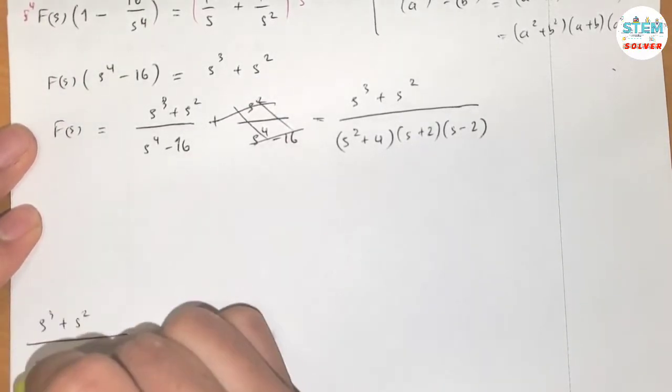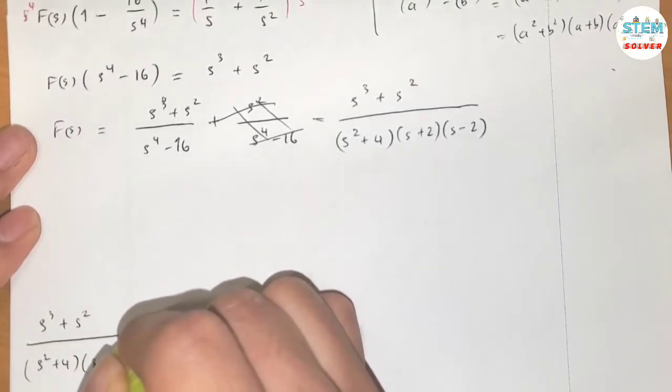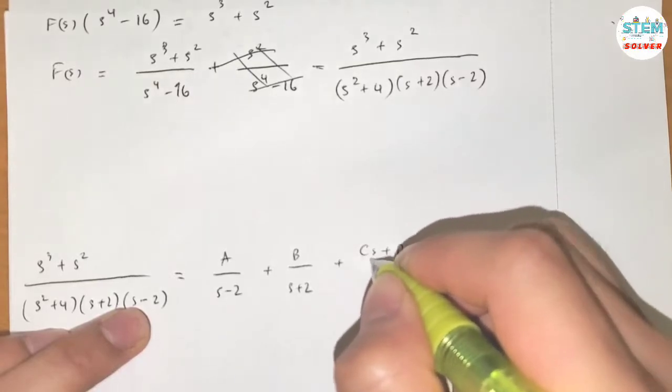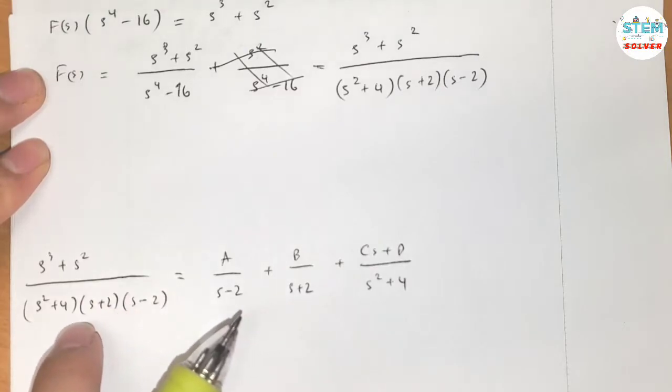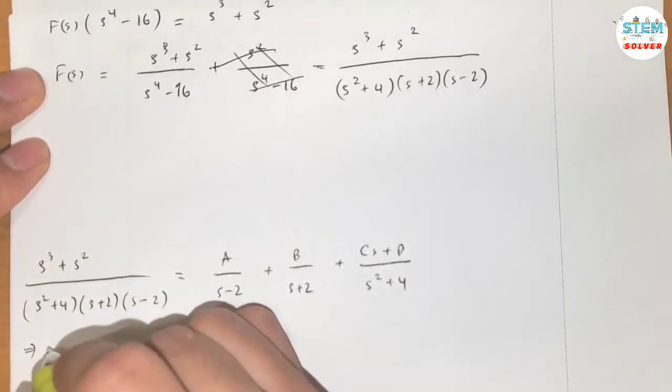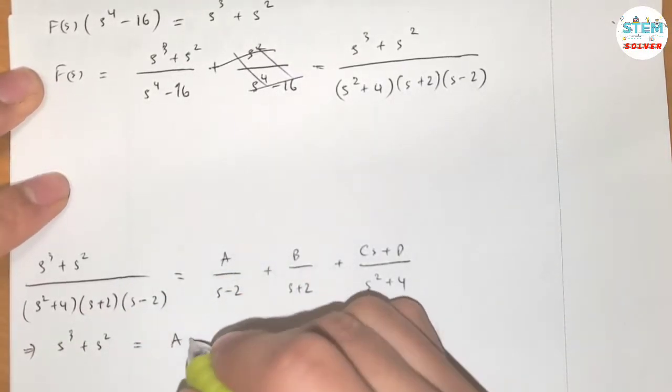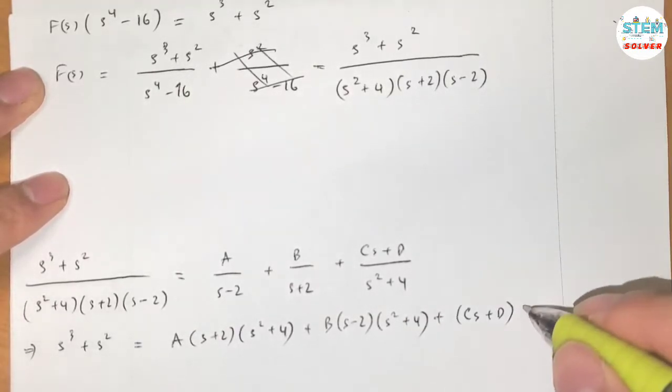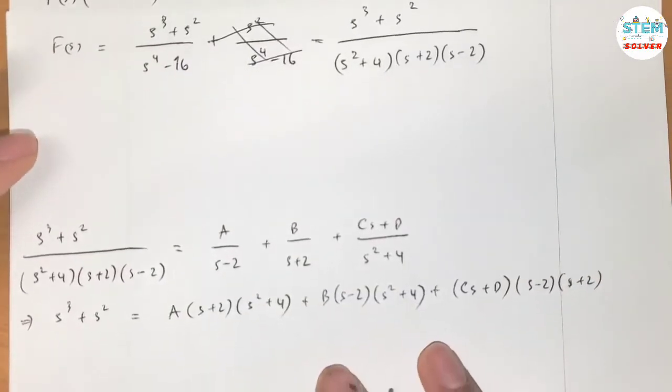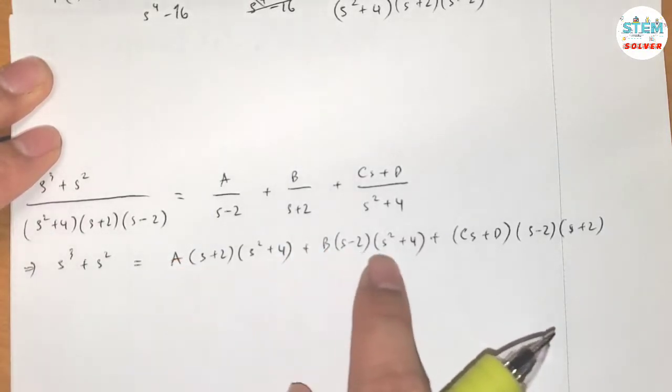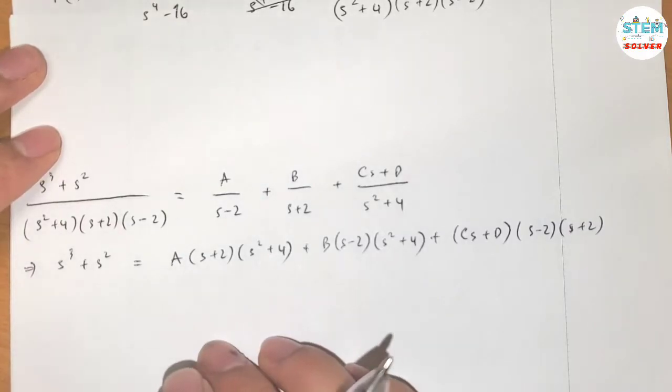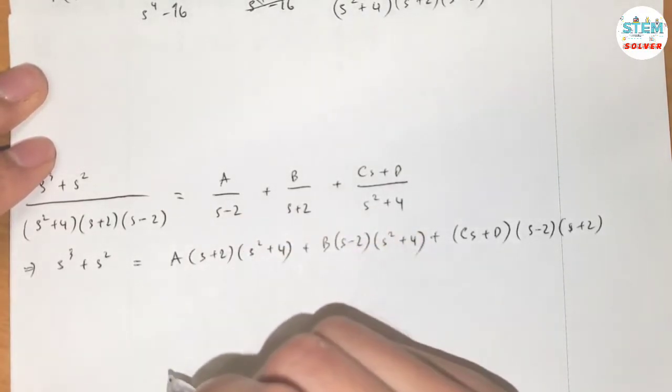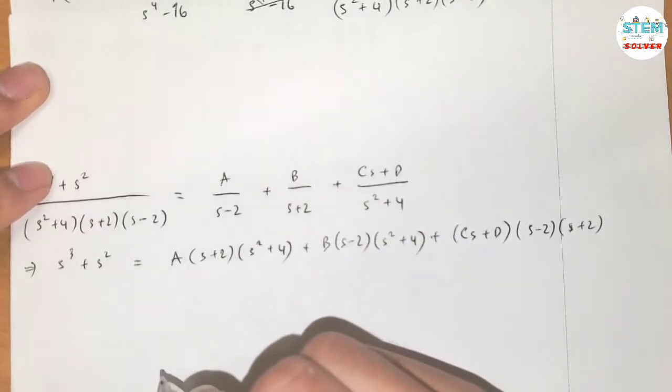So I have S cubed plus S squared over S squared plus 4 times S plus 2 times S minus 2. Just because I already showed you how to get this, if you don't get it, you can spend your time to do a step-by-step like this and you would get this. So now let me use the decomposition method to find fractions of this. Let me do it down here.